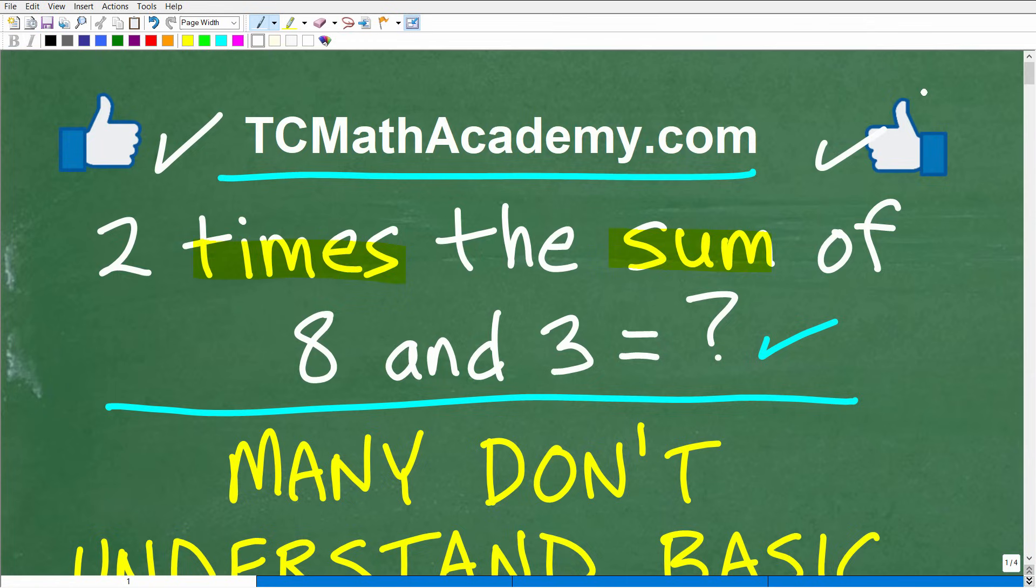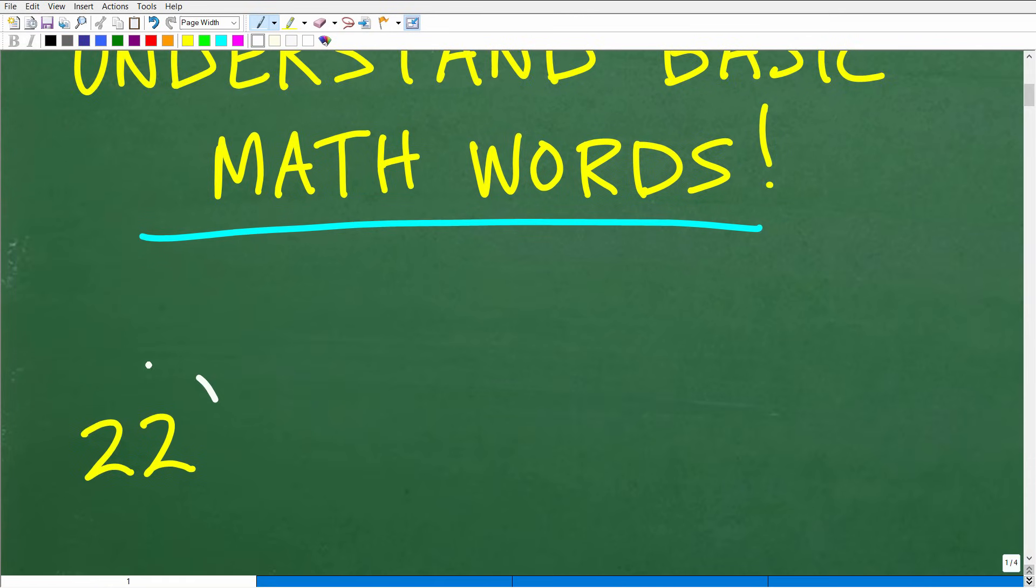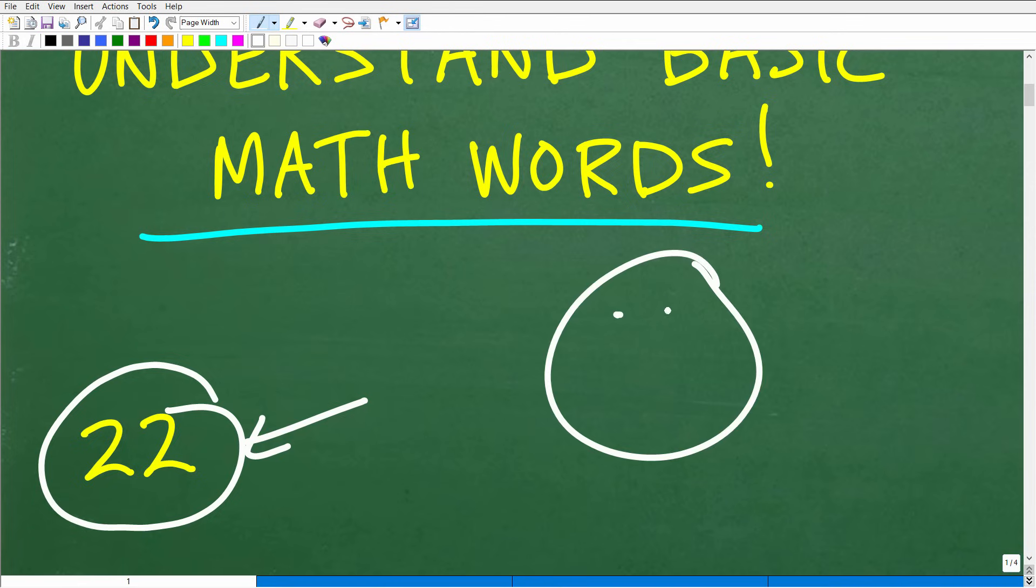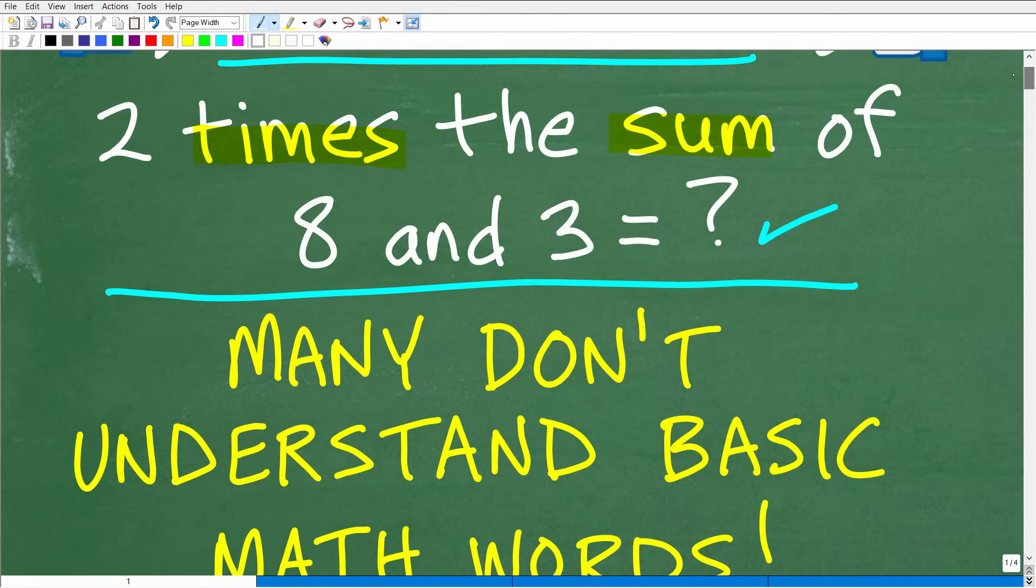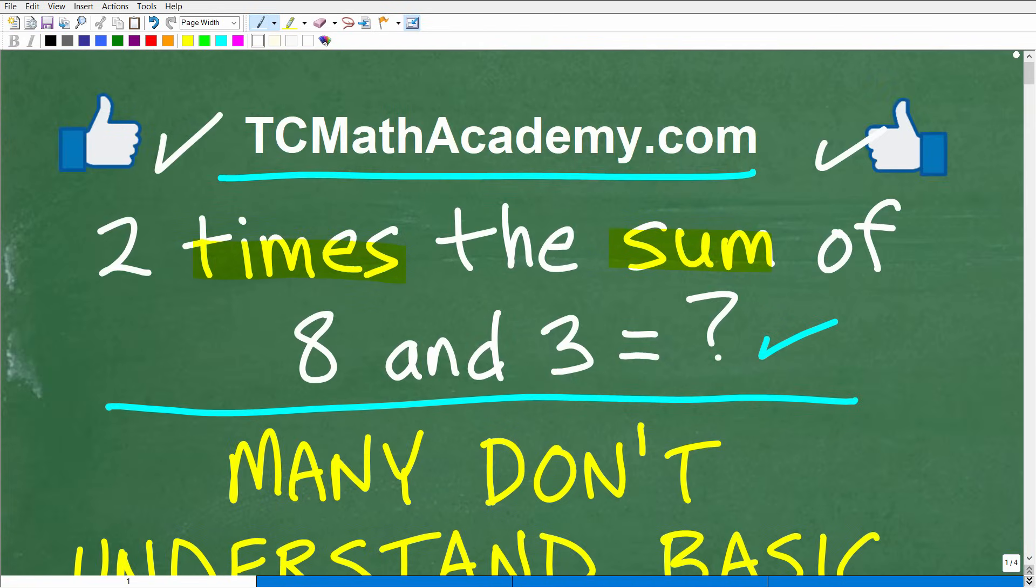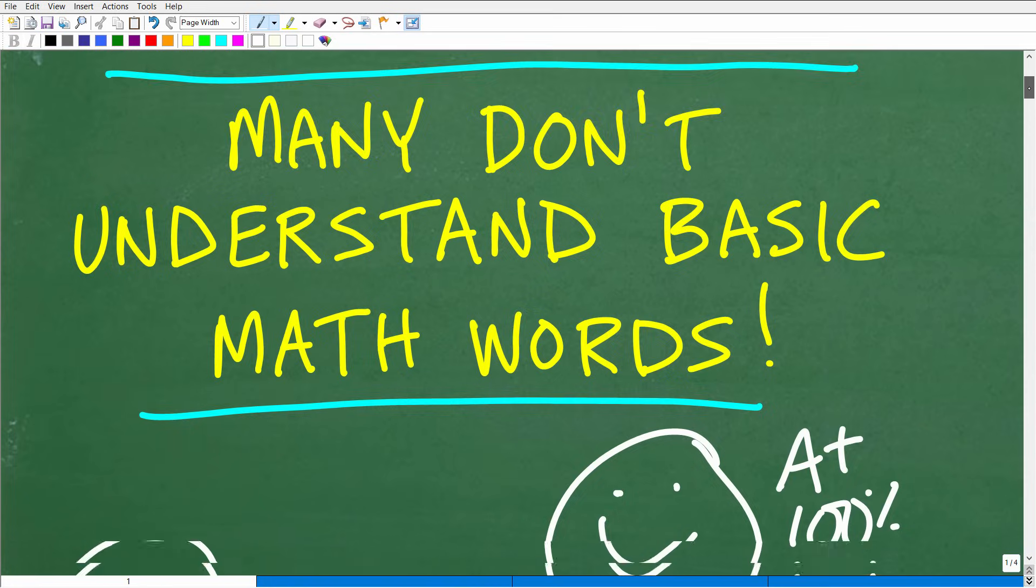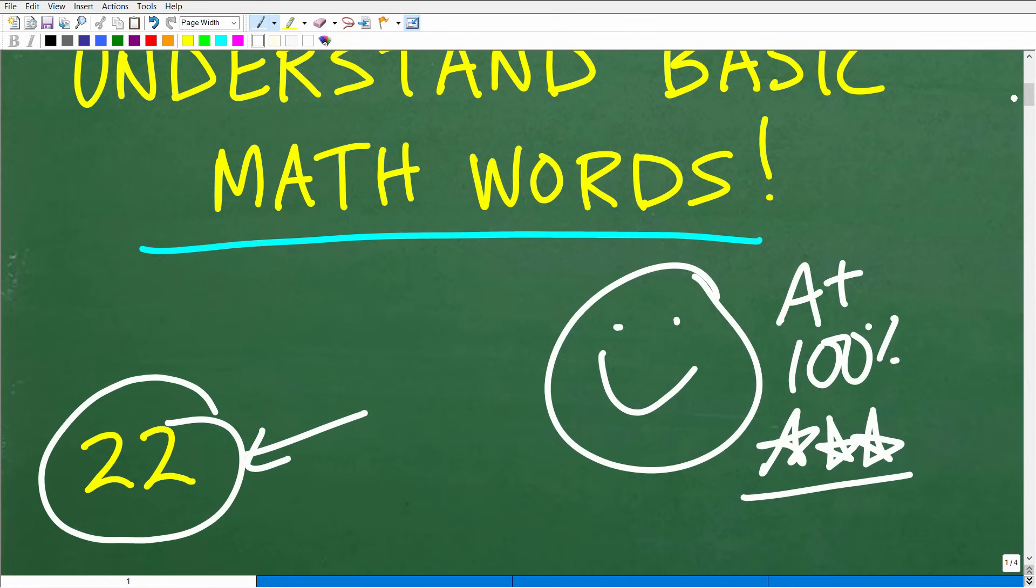So two times the sum of eight and three, what is this equal to? The answer is 22. Hopefully most of you out there got that right. And if that is the case, let's go ahead and celebrate by giving you a nice little happy face, an A plus, a 100% and multiple stars. So you can brag to your friends and family that indeed you are a certified professional expert in the area of translating a verbal phrase into a mathematical phrase. Sounds pretty cool, sounds so professional, sounds esoteric.